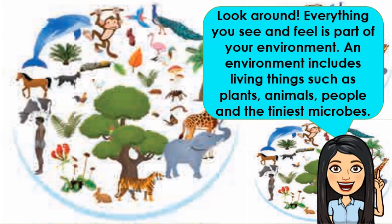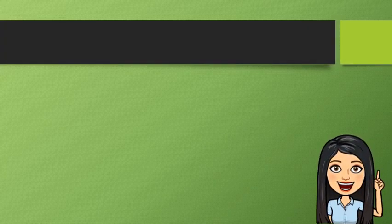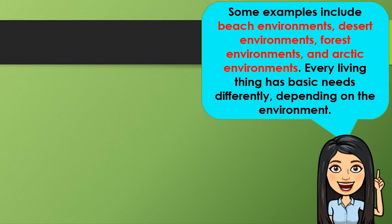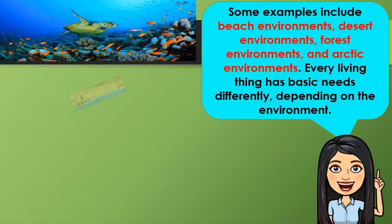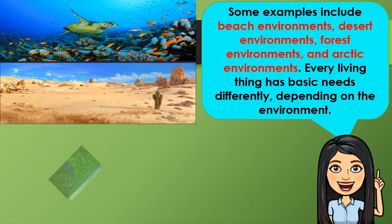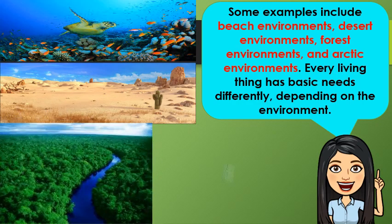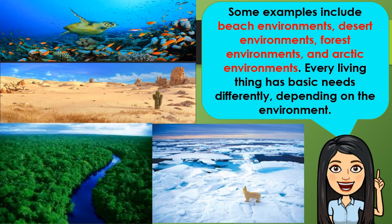I want you to look at your surroundings. Everything you see and feel is part of your environment. An environment includes living things such as plants, animals, people, and the tiniest microbes. Some examples include beach environments, desert environments, forest environments, and arctic environments. Every living thing has basic needs differently, depending on the environment.